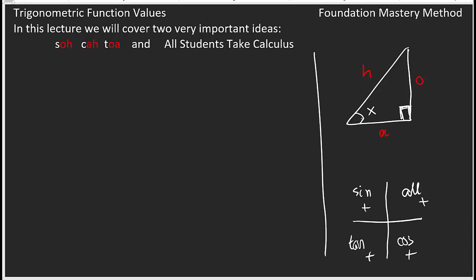In this section on trigonometric function values, we will cover two very important ideas. We take three functions: sine, cosine, and tangent. For all students taking calculus, in the first quadrant all will be positive. In the second quadrant, sine will be positive; tangent and cosine will be negative. In the third quadrant, tangent will be positive; sine and cosine will be negative. In the fourth quadrant, cosine will be positive; sine and tangent will be negative.